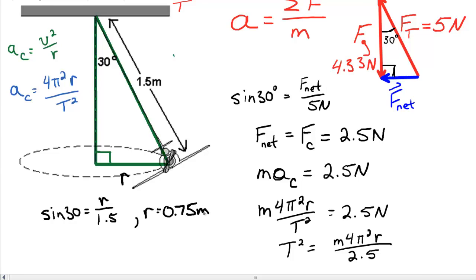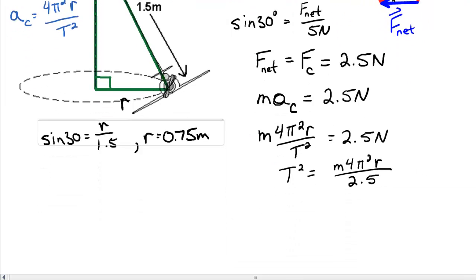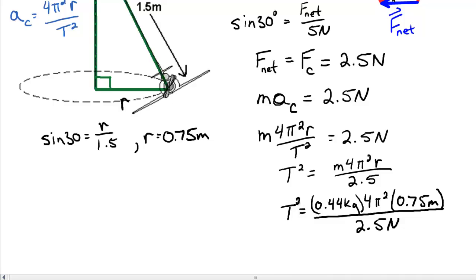And now it's just a little bit of algebra to plug it back in for T squared. So T squared is going to be equivalent to my mass, which was 0.44 kilograms, times 4, times pi squared, times r, which we've just figured out to be 0.75 meters, all divided by 2.5 newtons. That's equal to T squared. Solving it and taking the square root gives me my final answer of T equal to 2.28 seconds.